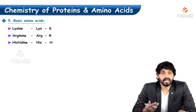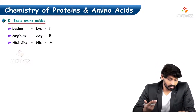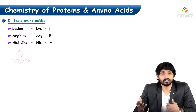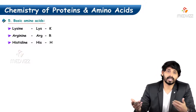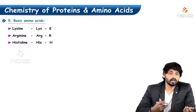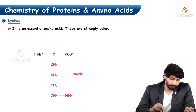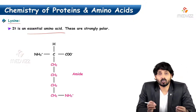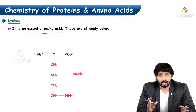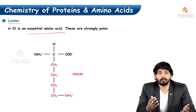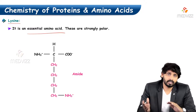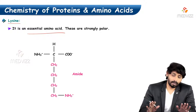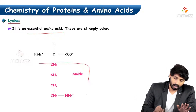Next are the basic amino acids: lysine, arginine, and histidine. These three carry lengthy nitrogen side chains. Lysine, arginine, and histidine are all essential amino acids. Lysine is essential and strongly polar, meaning it is water soluble. Looking at its structure, the R group has a lengthy chain with an extra amino group.